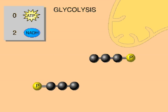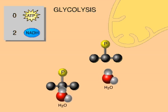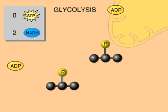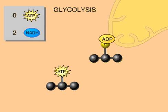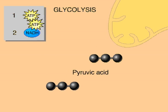This way of making ATP is called substrate-level phosphorylation. A couple more reactions rearrange the atoms in the three-carbon molecules, and more ATP is generated in the final reaction that yields pyruvic acid.